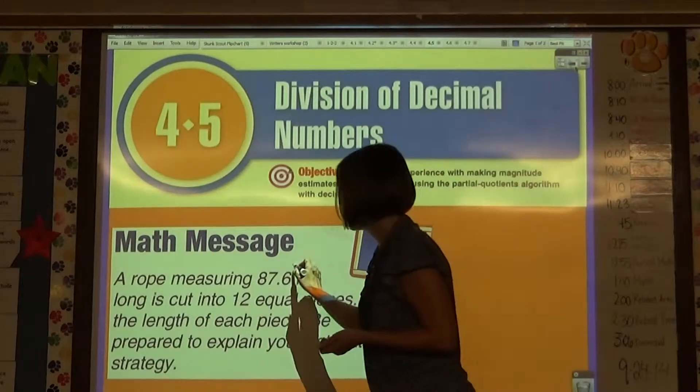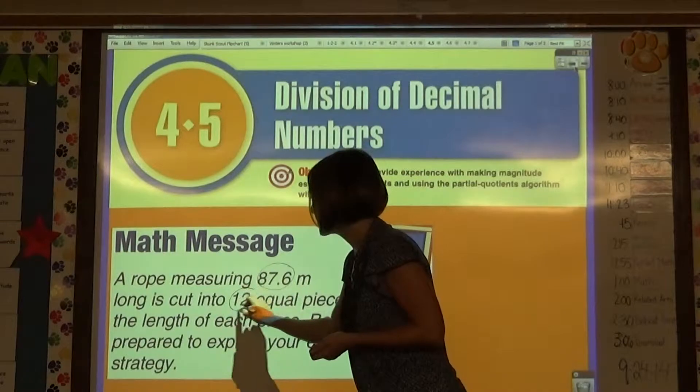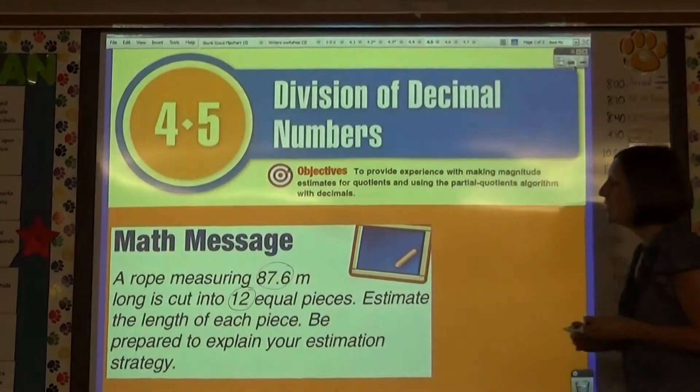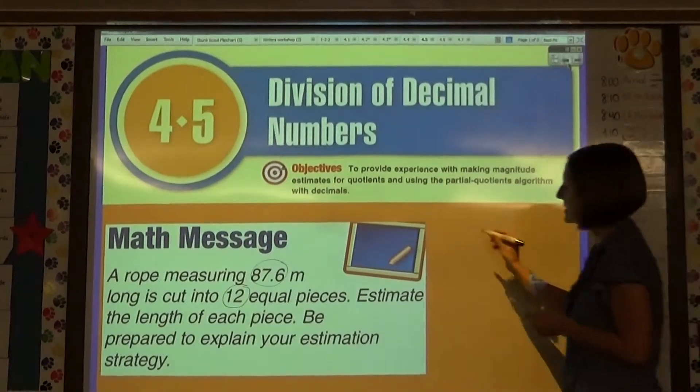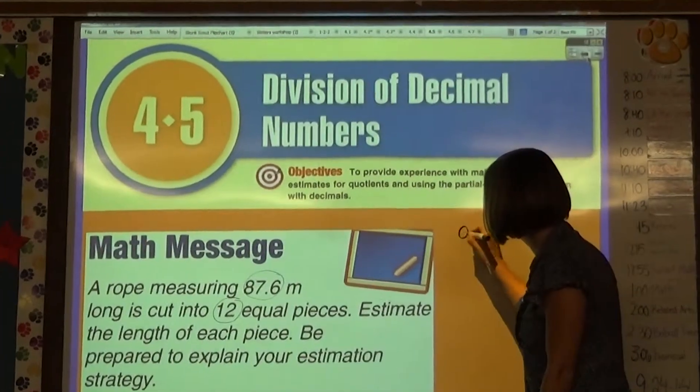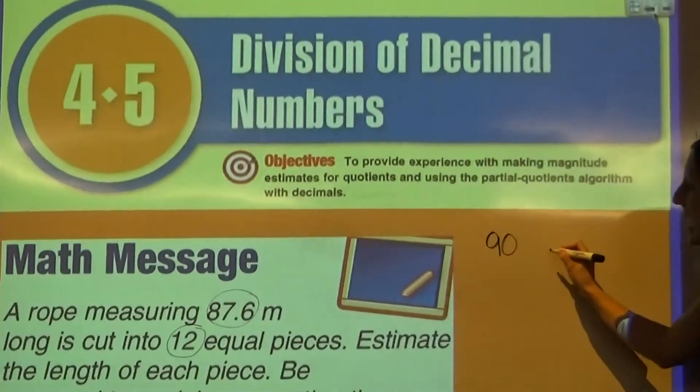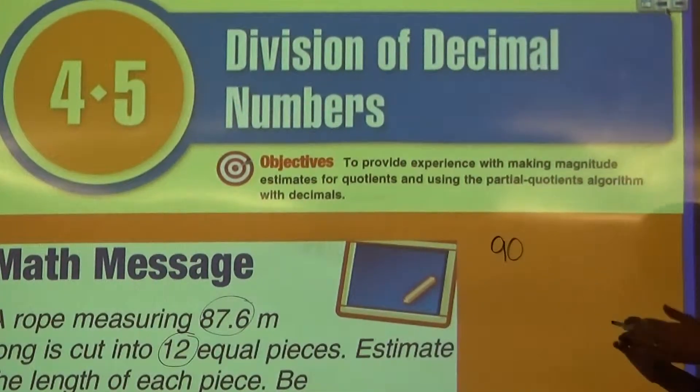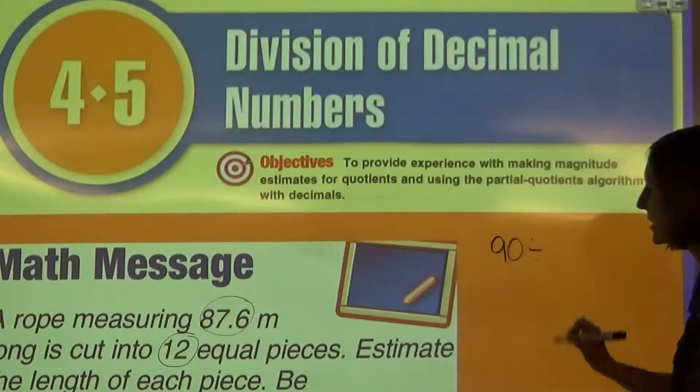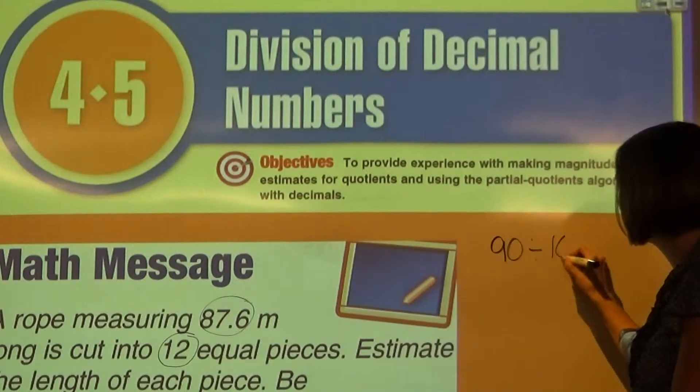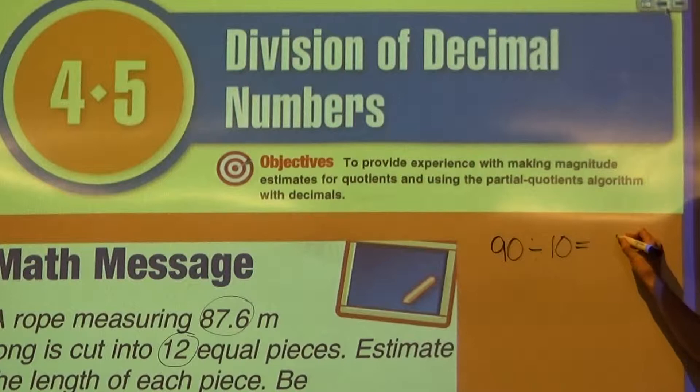So when I look at this problem, I know that I need to use these two numbers. You could round 87.6 up to 90, and we know we need to divide it into equal pieces. 12 is pretty close to 10, which would make a really easy division problem.